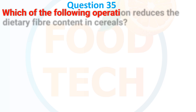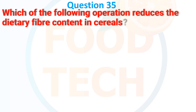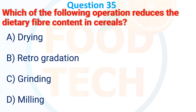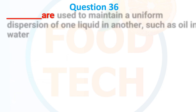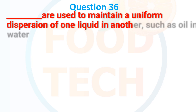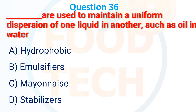Which of the following operations reduces the dietary fiber content in cereals? A. Drying, B. Retrogradation, C. Grinding, D. Milling. The answer is D. Milling.